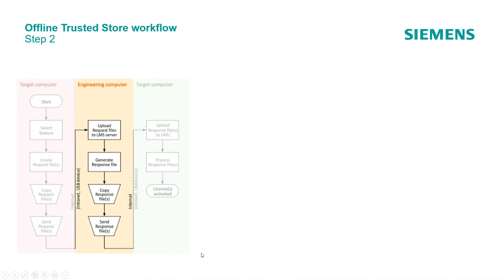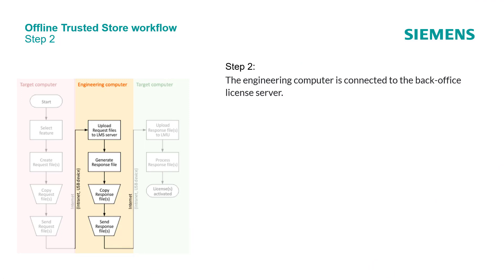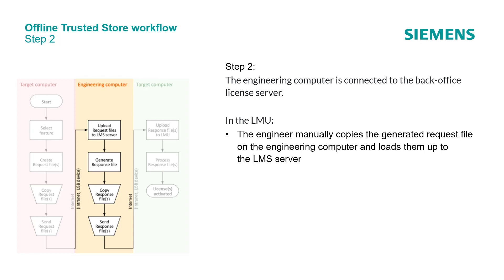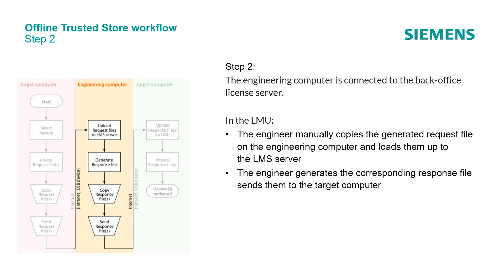The file has been created successfully. Now make sure that the request file will be available at the engineering computer. In Step 2, the engineering computer is connected to the back office license server. In the LMU, the engineer manually copies the generated request file on the engineering computer and loads it up to the LMS server. The engineer generates the corresponding response file and sends it to the target computer.